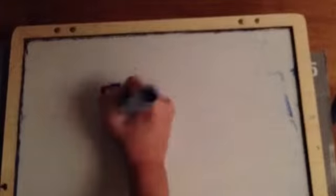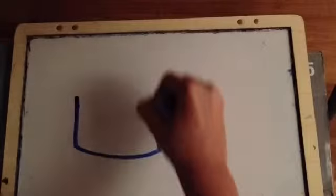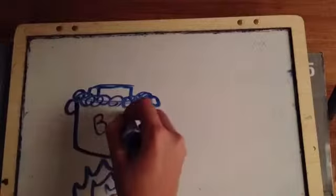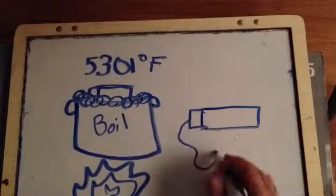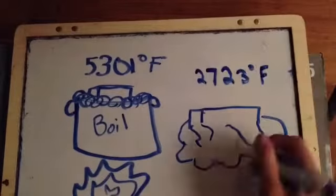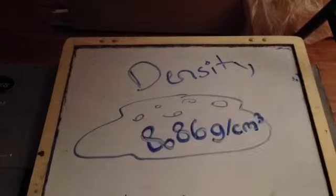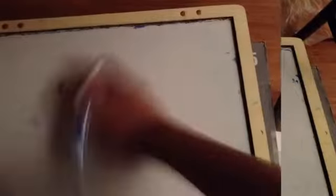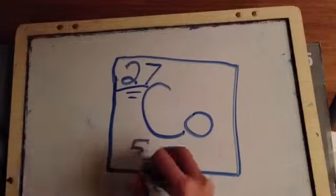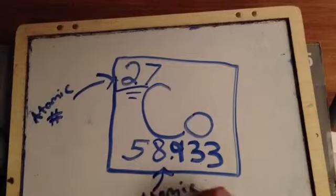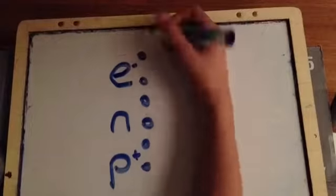Its key isotope is cobalt-59. It has a boiling point of 5,301 degrees Fahrenheit and a melting point of 2,723 degrees Fahrenheit. Its density is 8.86 grams per centimeter cubed. Its atomic number is 27 and its relative atomic mass is 58.933. It has 27 protons, 32 neutrons, and 27 electrons.